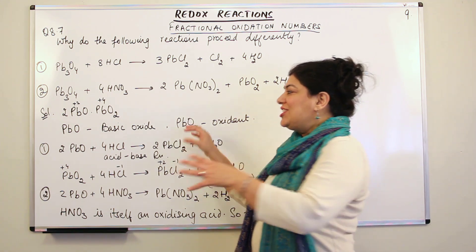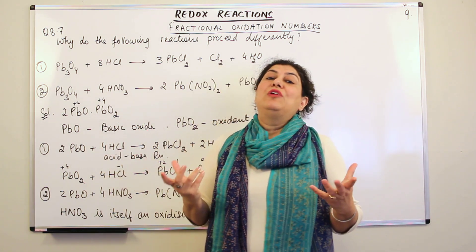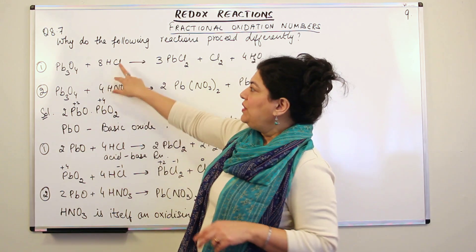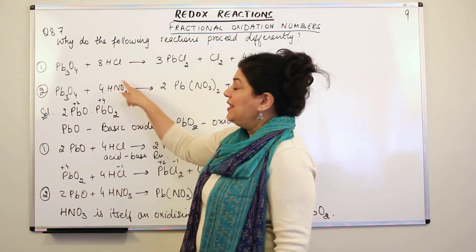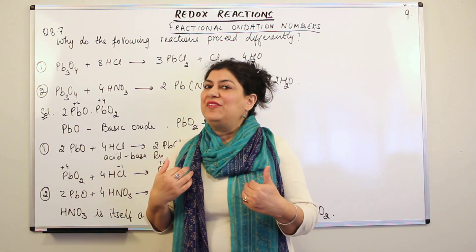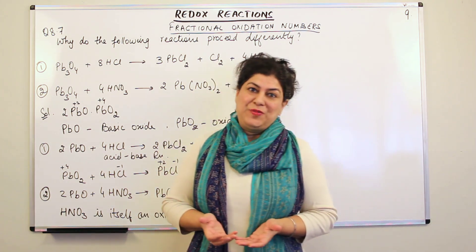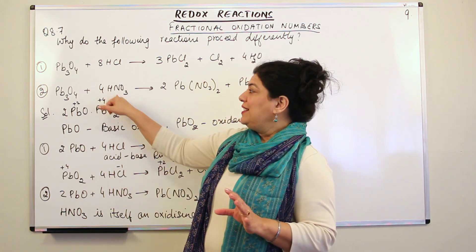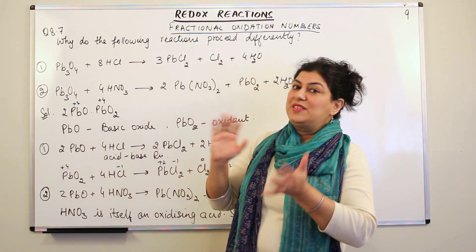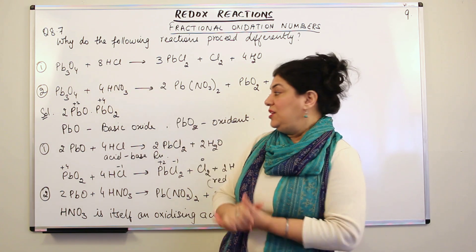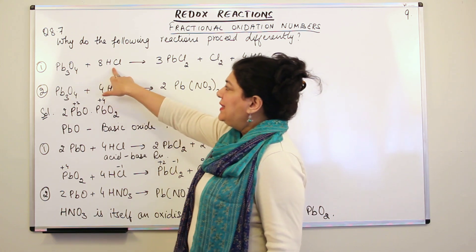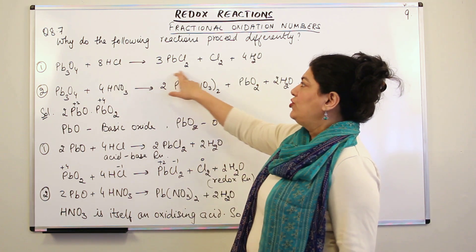It is just this difference which is responsible for the difference in behaviour with these two acids. There is also a difference between the two acids: HNO3 is an oxidising acid. Nitric acid itself is oxidising in nature, or it gets reduced. Therefore due to the difference in the properties of the acids, there is a difference in the way Pb3O4 reacts with these two acids. Let us take the first example: with HCl.